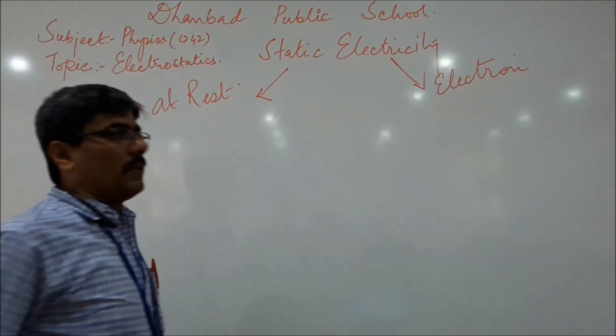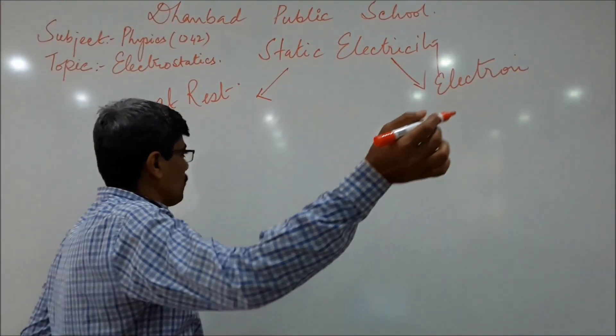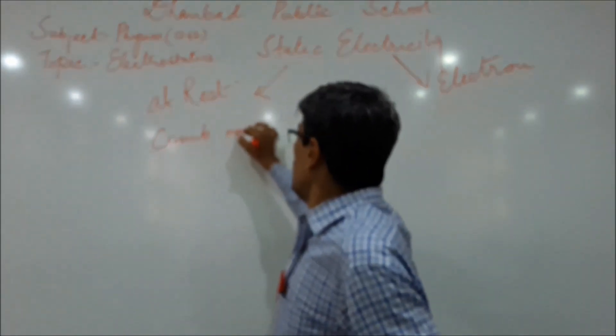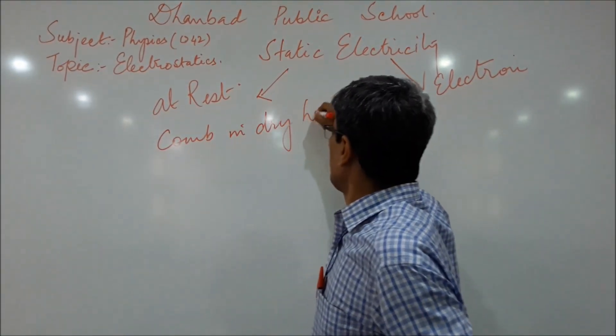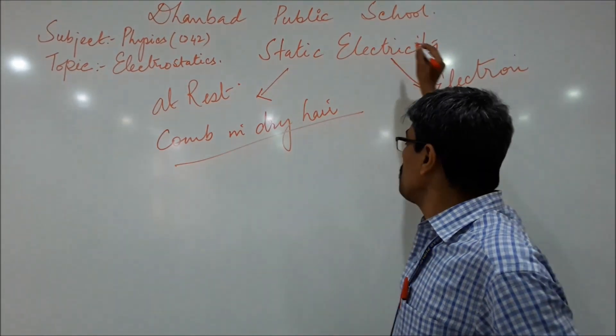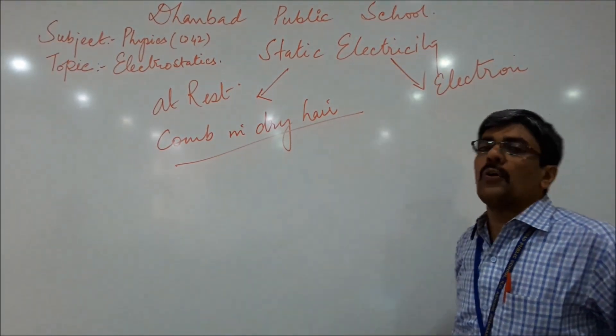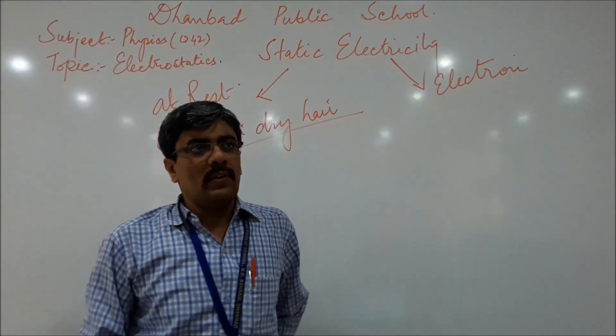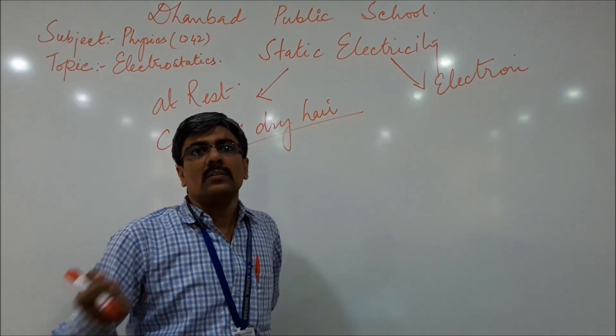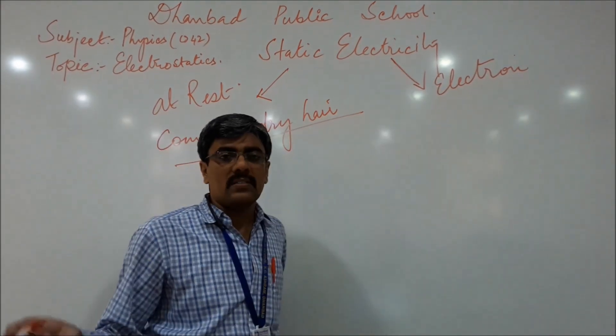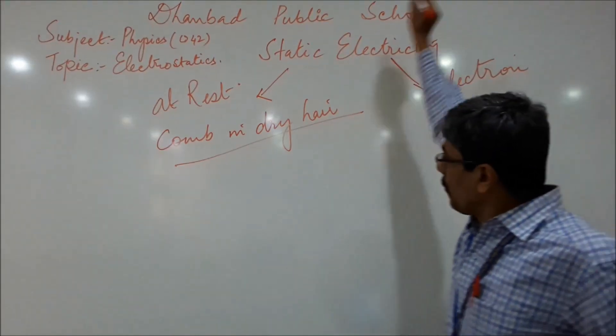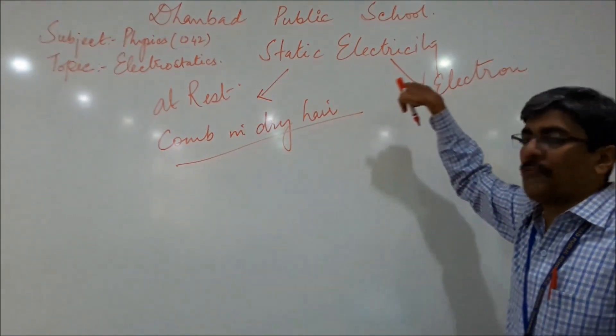Let's start our topic with common experiences. Most of us have this experience when we rub a comb in dry hair, we find that this comb acquires a typical characteristic of attracting small bits of paper or straw. Similarly, when we rub a polymer ruler or scale on our shoulders or sleeves, we find it acquires the same property. The strange thing, before rubbing it did not have that property. So, it acquired the property after rubbing.